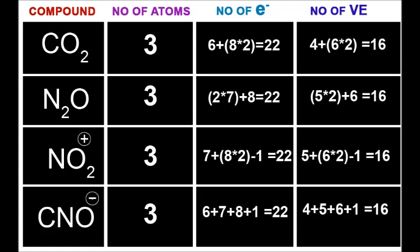Next is CNO minus. When there's a negative charge, you add one more electron. Carbon has 6 electrons, nitrogen has 7, oxygen has 8. With the minus sign, you add one more. So 21 plus 1 equals 22.